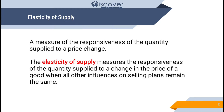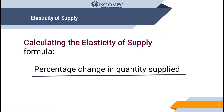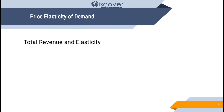To calculate elasticity of supply, we use: percentage change in quantity supplied divided by percentage change in price. This is the same formula used in price elasticity of demand, but instead of quantity demanded, we write quantity supplied.